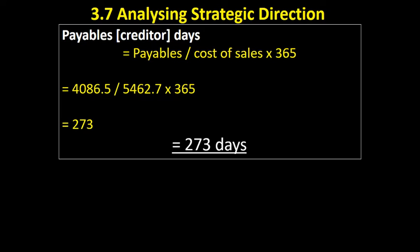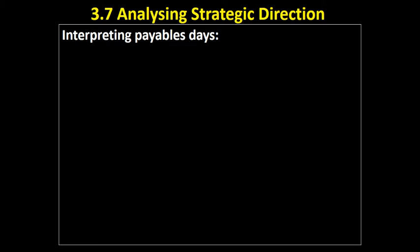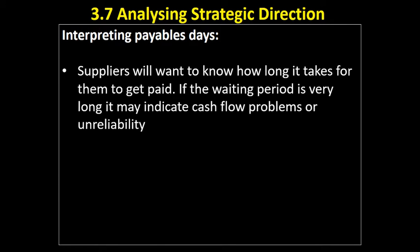So it's taking this company 273 days between receiving goods from its suppliers and paying its suppliers, which seems like quite a long time. These are figures from the 2017 exam. How do we interpret that? Suppliers will use this information to understand how long it takes for them to get paid. A long waiting period indicates the business may not be reliable at paying its debts, or that it has cash flow problems.